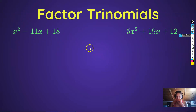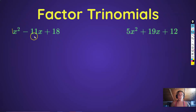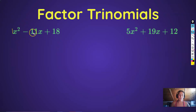Our next strategy is factoring trinomials. The two types you'll see are: a leading coefficient of 1, meaning no number in front of x squared, and a leading coefficient greater than 1, meaning something like 2 or bigger in front. The strategy for the greater-than-1 case could also be used for the leading-coefficient-1 case, but there's a shortcut when the leading coefficient is 1 that makes things really quick.